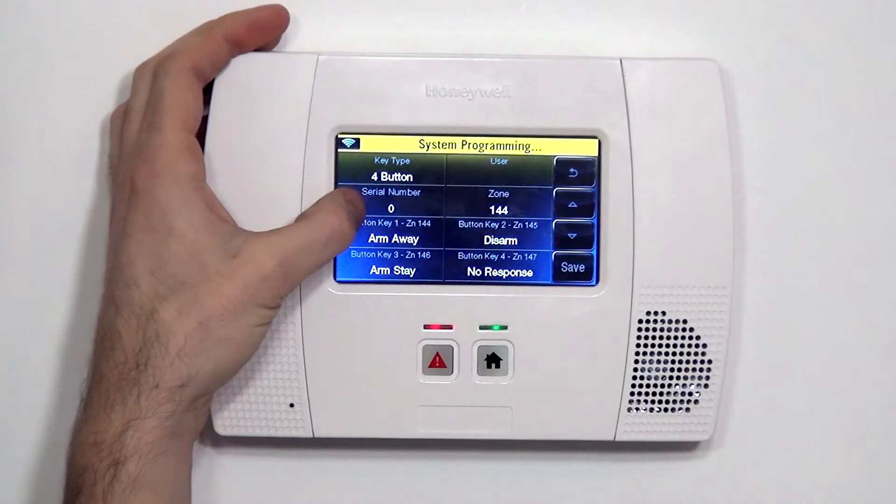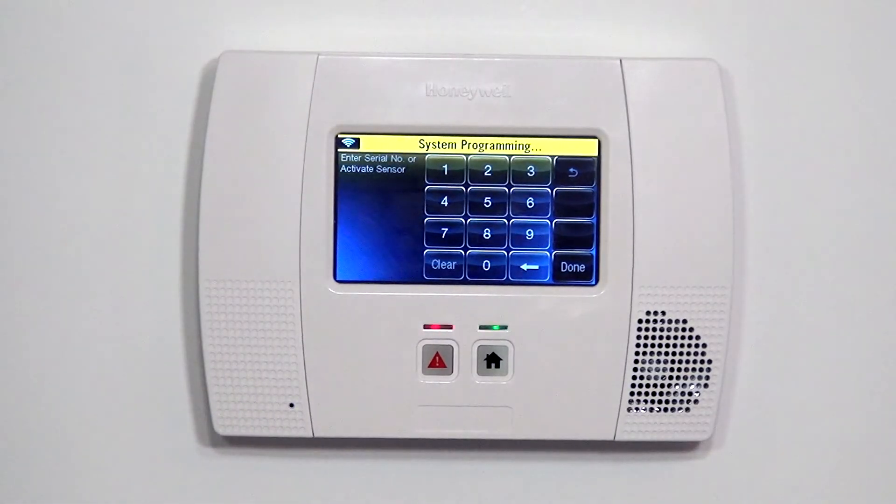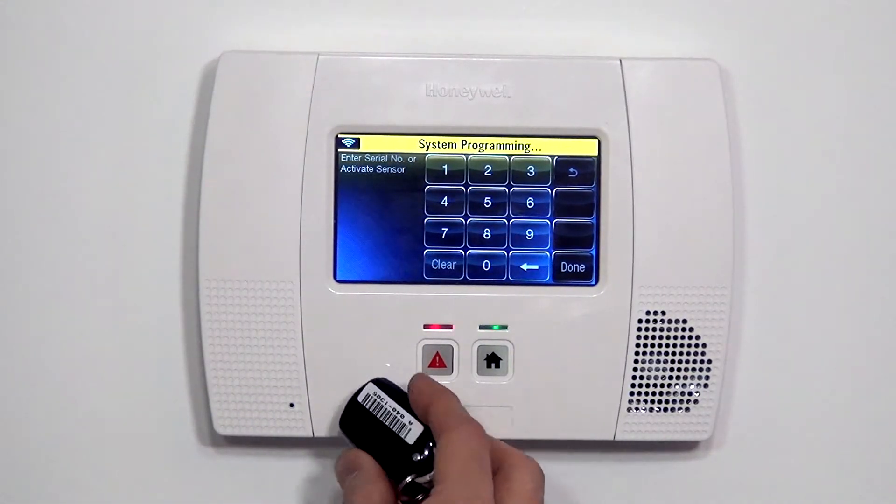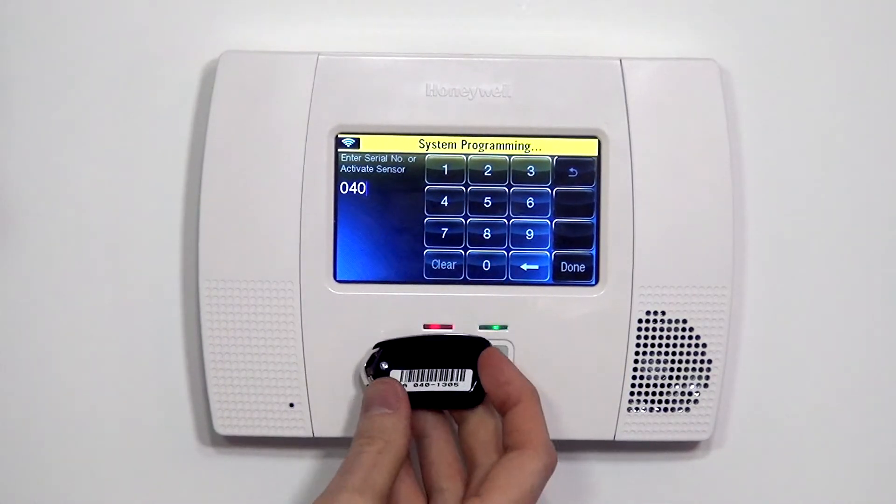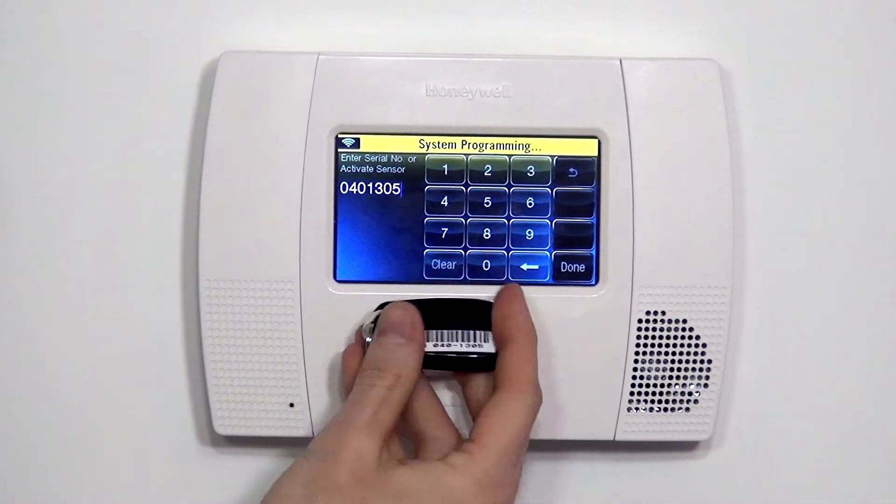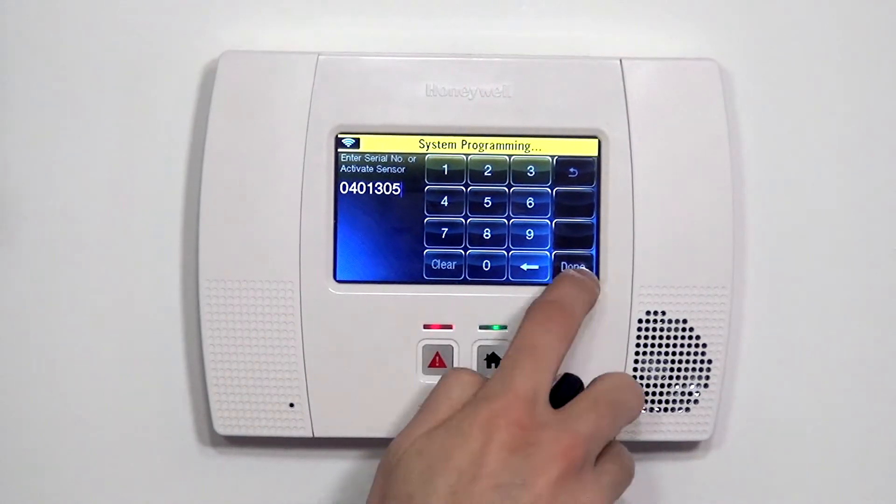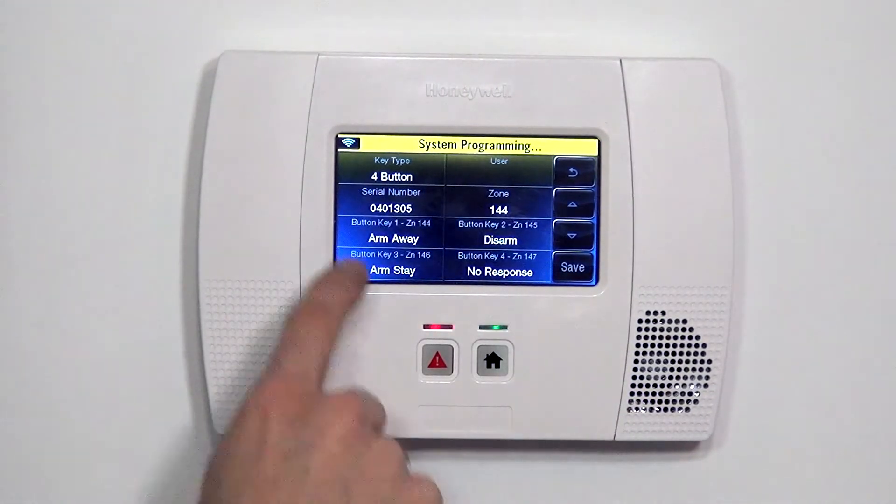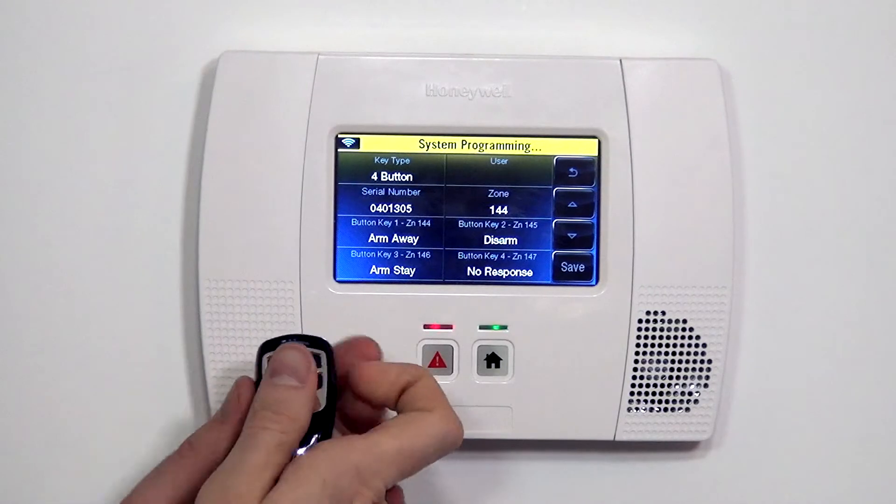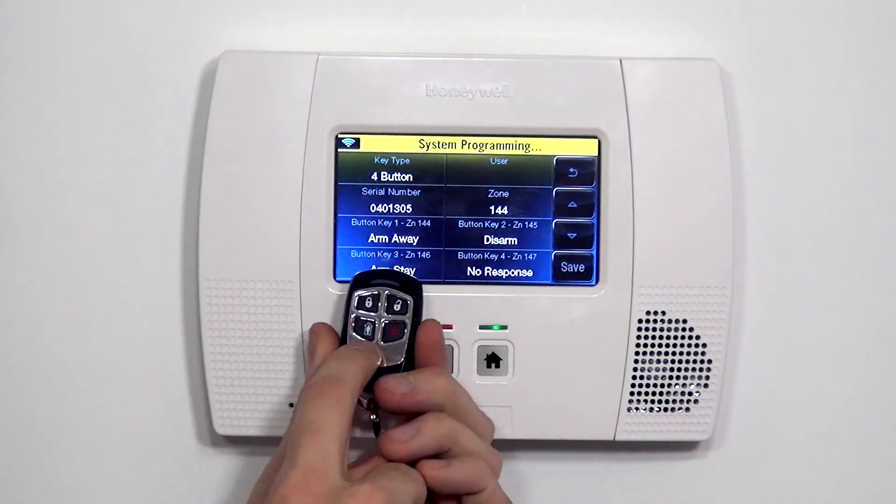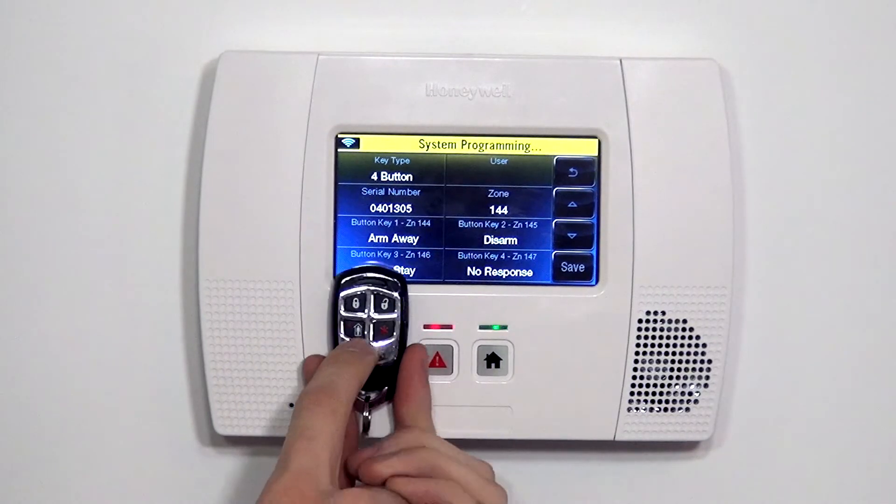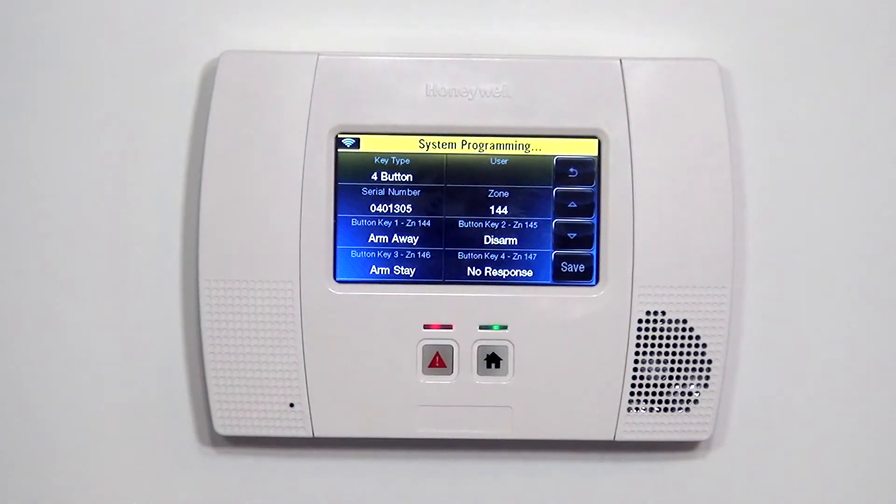So the first thing we want to do is click in the serial number. That allows us to enroll the device. We can type in the serial number on the back, 0401305, and done. And it automatically maps button number one to arm away, button number two to disarm, button number three to arm stay, and button number four says no response. That means this button activation won't do anything.